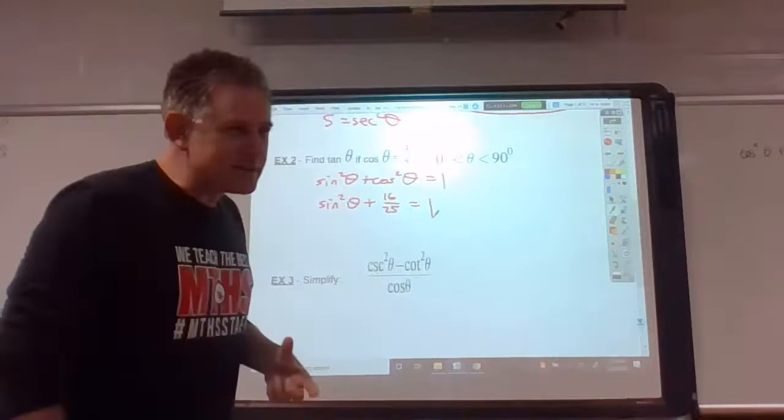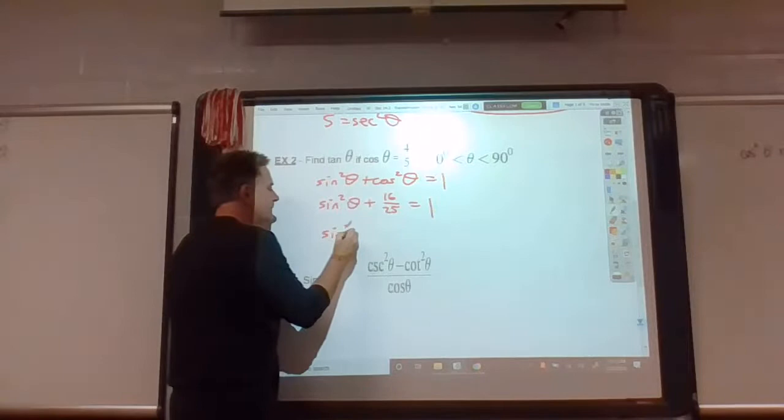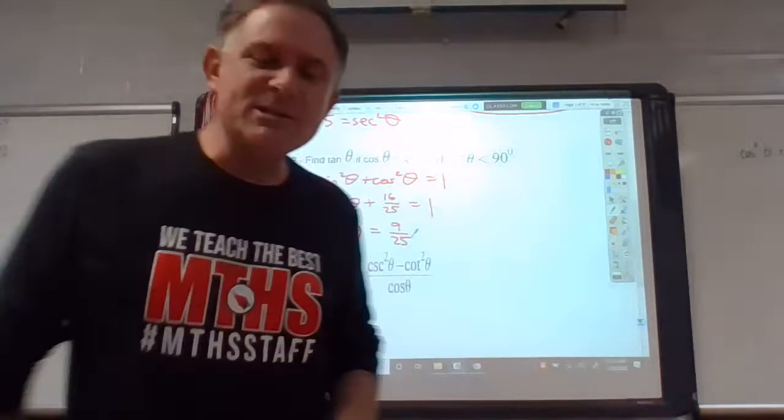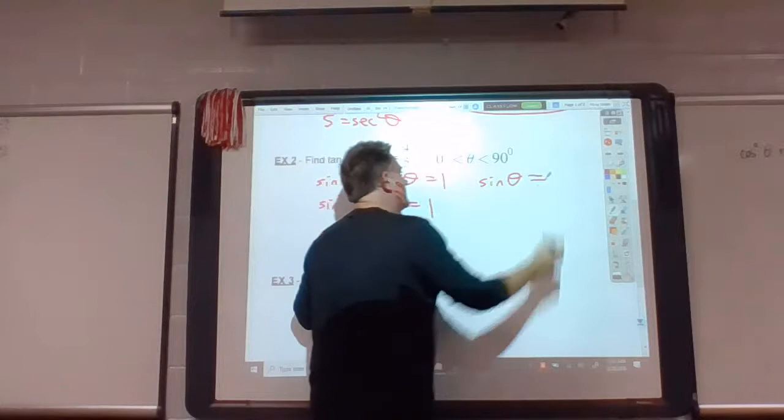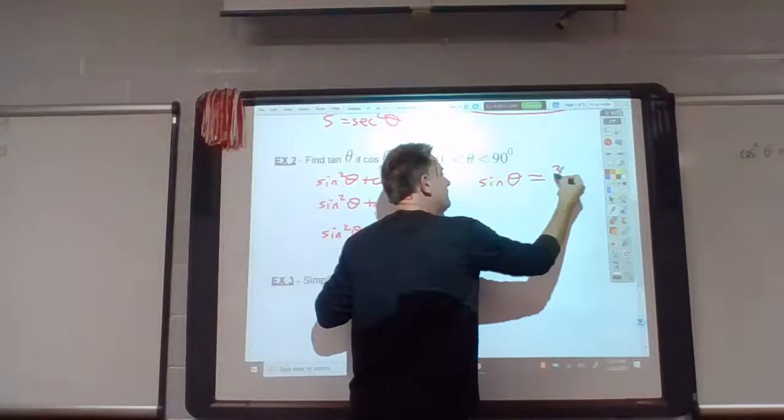And we're in quadrant one. So cosine squared is sixteen twenty-fifths. Let's go ahead and subtract sixteen twenty-fifths from both sides. Use your calculators if you can't do this in your heads, but if you can't do this in your heads, why not? I feel like twenty-five twenty-fifths minus sixteen twenty-fifths is that. Take the square root. Square root of nine twenty-fifths, that's three-fifths plus or minus. But we're in quadrant one, right? And everything in quadrant one is positive.